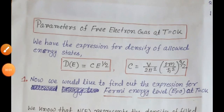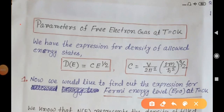In this class we would like to find out some important parameters of free electron gas at absolute zero temperature. We have the expression for density of allowed energy states as D(E) equal to C·E^(1/2), where C is (V/2π²)·(2m/ℏ²)^(3/2).